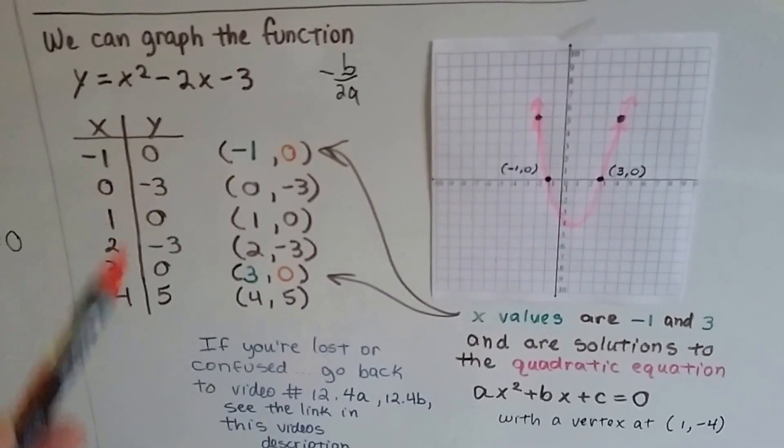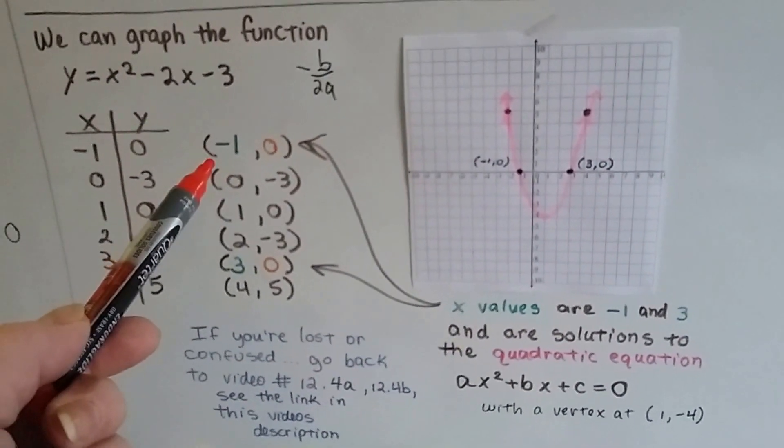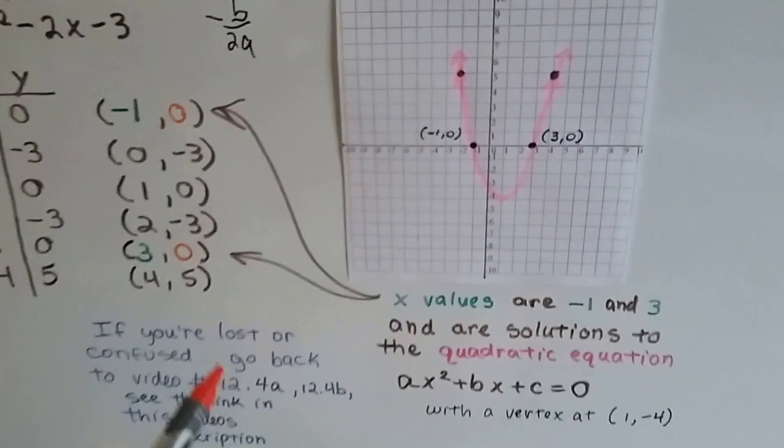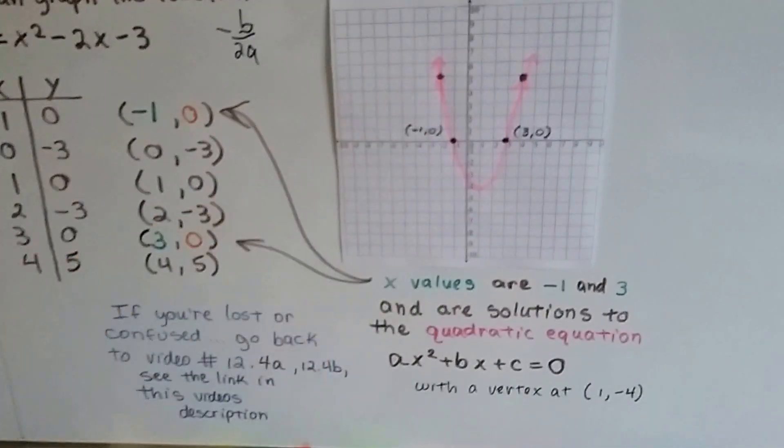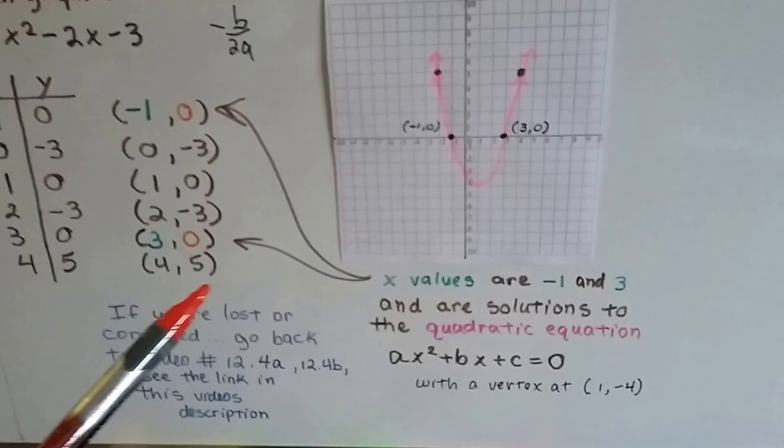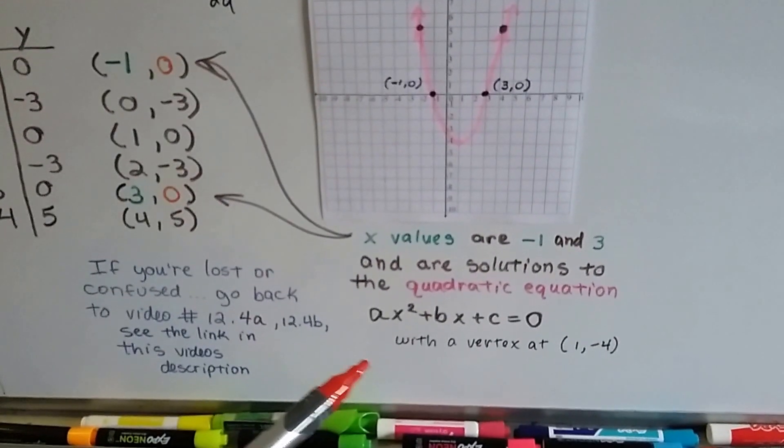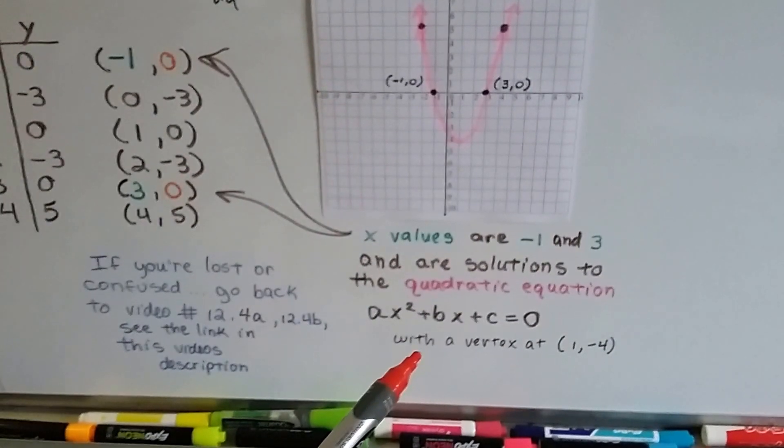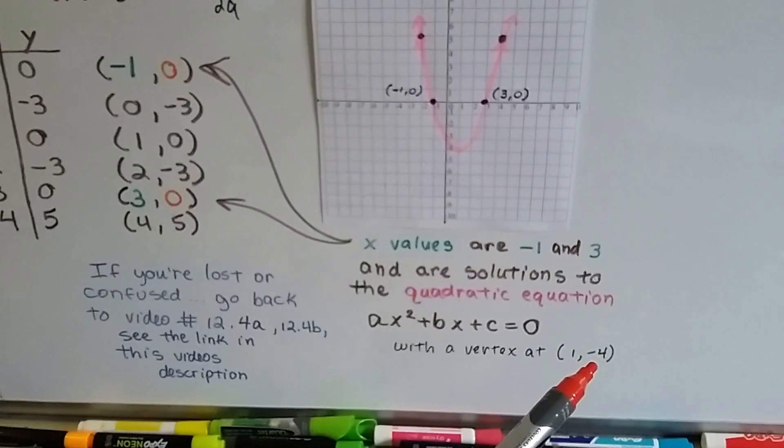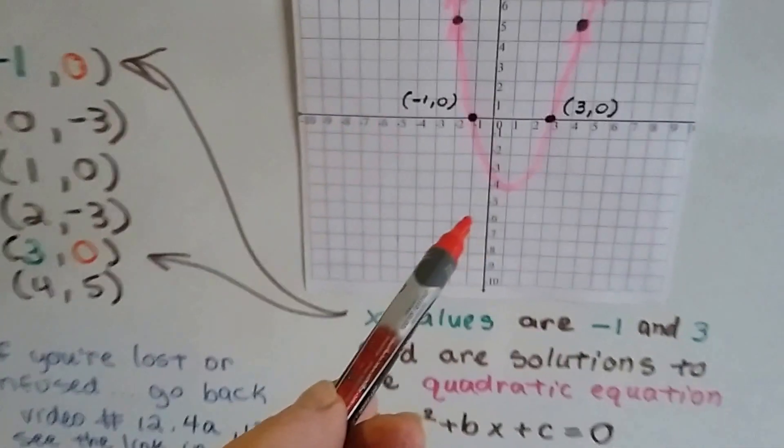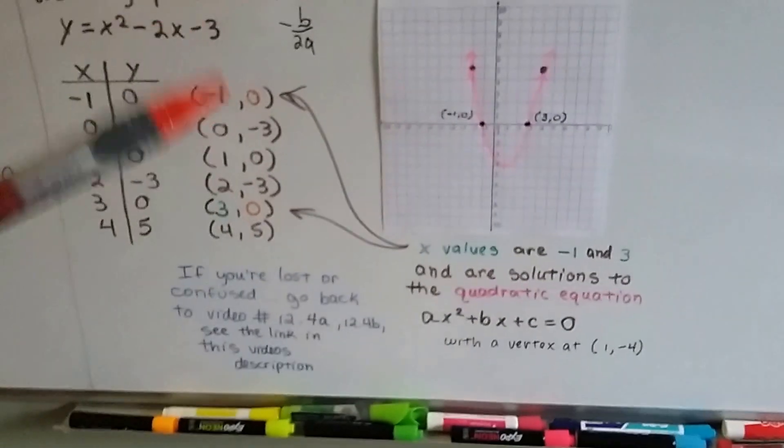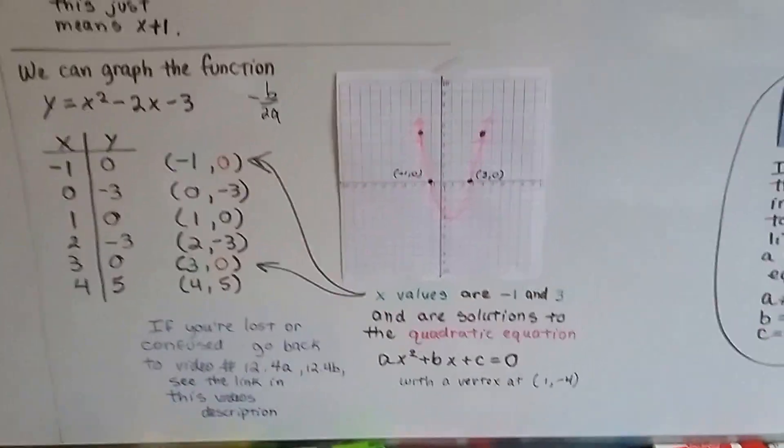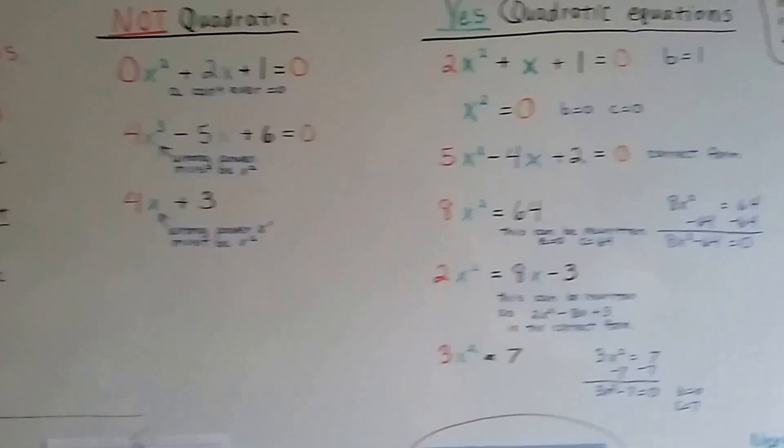We got our ordered pairs here from making our table and when we plot negative 1, 0 right here, and we plot 3, 0 right here and we find our vertex, we can draw our parabola. Well these values right here, these coordinates that I chose, these two, they're solutions to the quadratic equation, ax squared plus bx plus c equals zero. And so are these. The vertex is at 1 for x and negative 4 for y. It's right there. Okay, so they are solutions to a quadratic equation. It's set at zero.